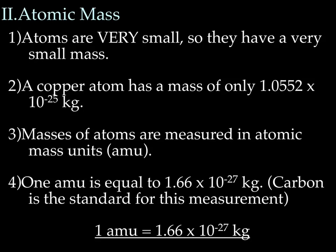If you remember your scientific notation, that means a copper atom weighs 0.00000000000000000000000000010552 kilograms. So we're talking small, not much mass. Because they're so small, and it's a pain to write that many zeros, scientists came up with a unit just for atoms. That unit is called an AMU — Atomic Mass Units.